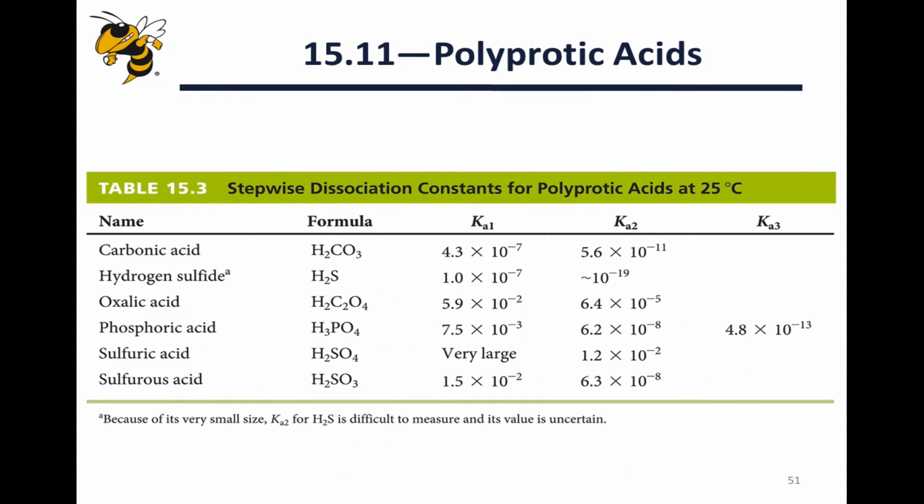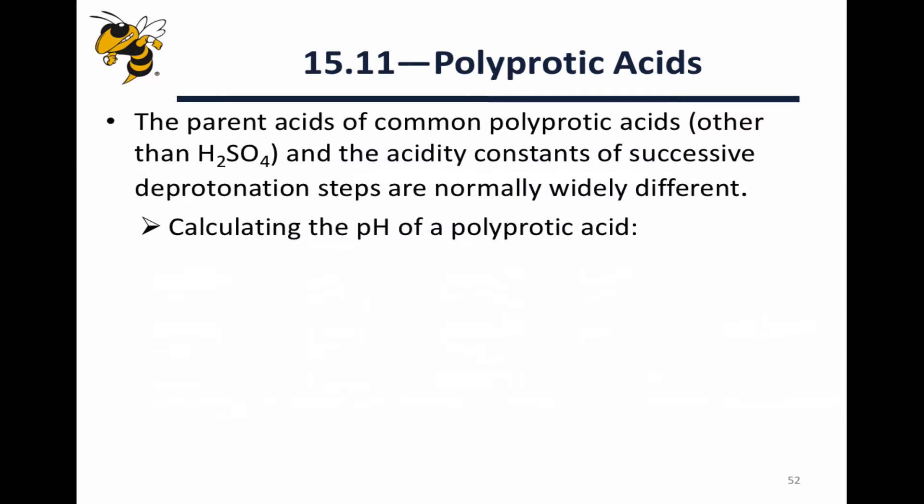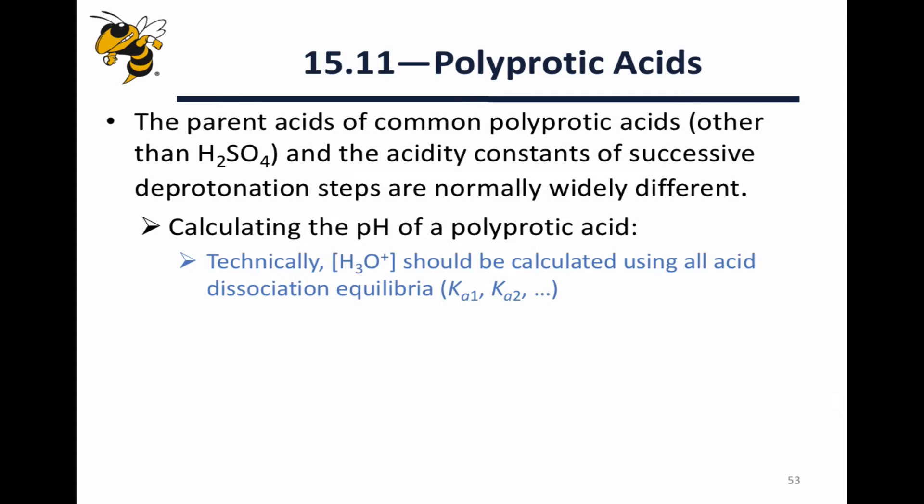This slide lists some examples of dissociation constants for polyprotic acids. In each case, Ka decreases substantially going from Ka1 to Ka2. This decrease turns out to be very convenient when calculating the pH of a polyprotic acid.